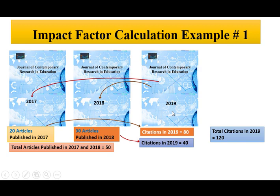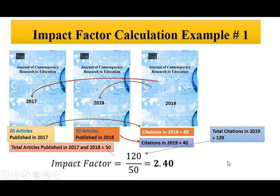The impact factor for this journal for 2019 is simply 120 divided by 50, which equals 2.40. This means that on average, each paper published in this journal is cited 2.4 times. That is why some editors instruct potential authors to cite papers from the same journal, so that the impact factor can be increased. The more citations a journal has, the higher its impact factor.